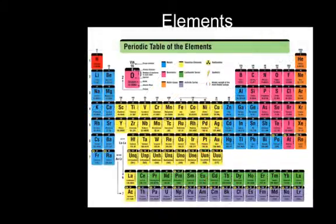Lots of different kinds of atoms have been discovered. They all have different chemical properties based on the number of protons and electrons they have. Each different kind of atom is called a chemical element, and each element is defined by its atomic number.